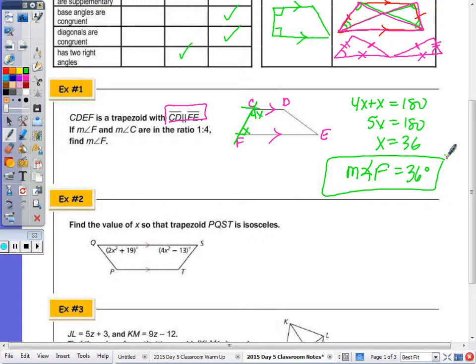The next one, find the value of X so that the trapezoid is isosceles. Well, if I want that trapezoid to be isosceles, I want the non-parallel sides to be congruent, I want the diagonals to be congruent, but I also would want these base angles to be congruent. And since I'm given the algebraic expressions for the base angles, I want those to be congruent, therefore their measures to be equal. 2X squared plus 19 equals 4X squared minus 13. Let's solve for X by factoring. So we want it in standard form, let's get zero on one side, subtract the 2X squared from 4X squared, we get 2X squared, and then subtract the 19 from 13, and we get negative 32.